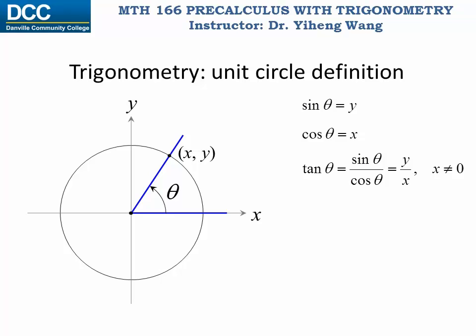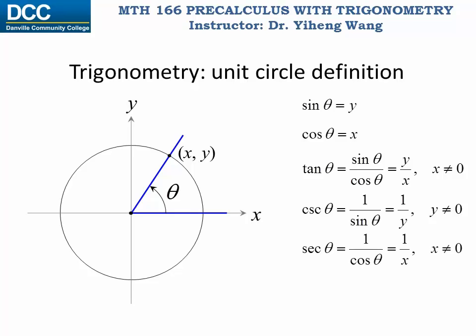Then we have the other three trigonometric functions defined as the reciprocals of these three. Cosecant theta is one over y. Secant theta is one over x. And cotangent theta is x over y, which is one over tangent theta.